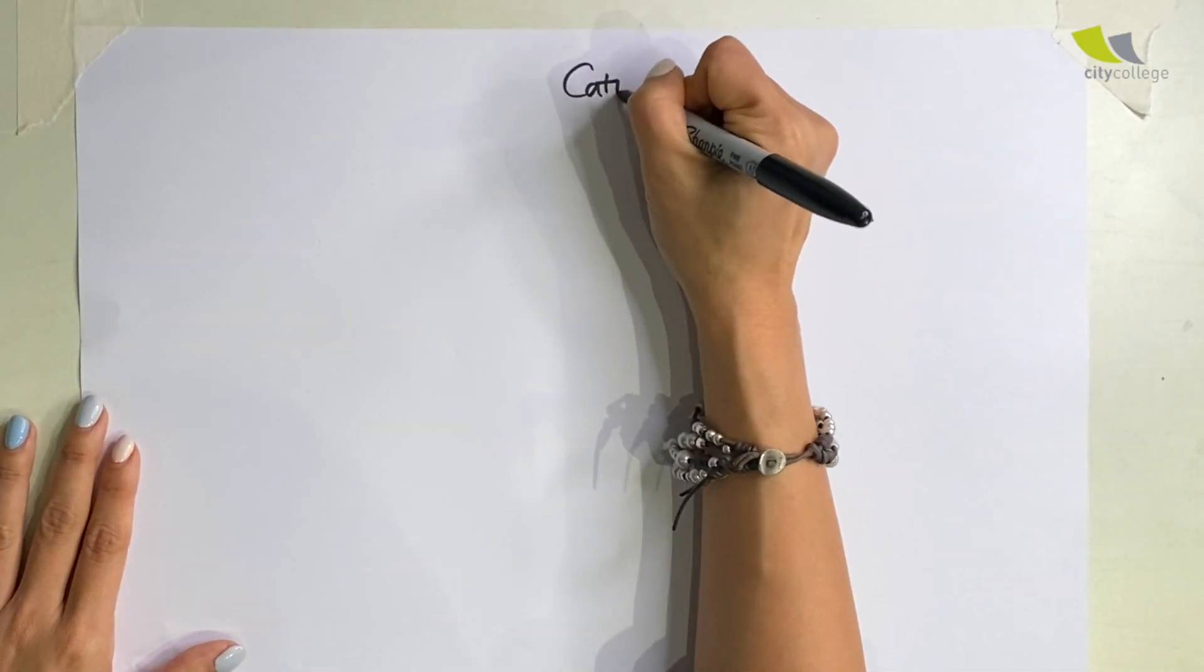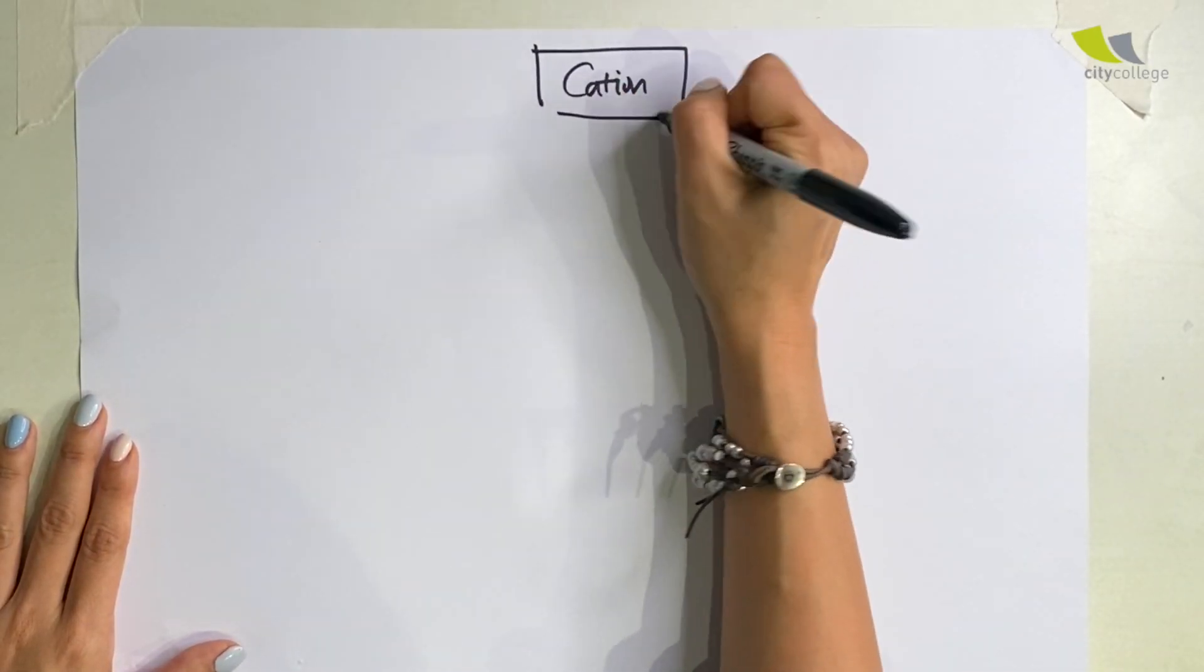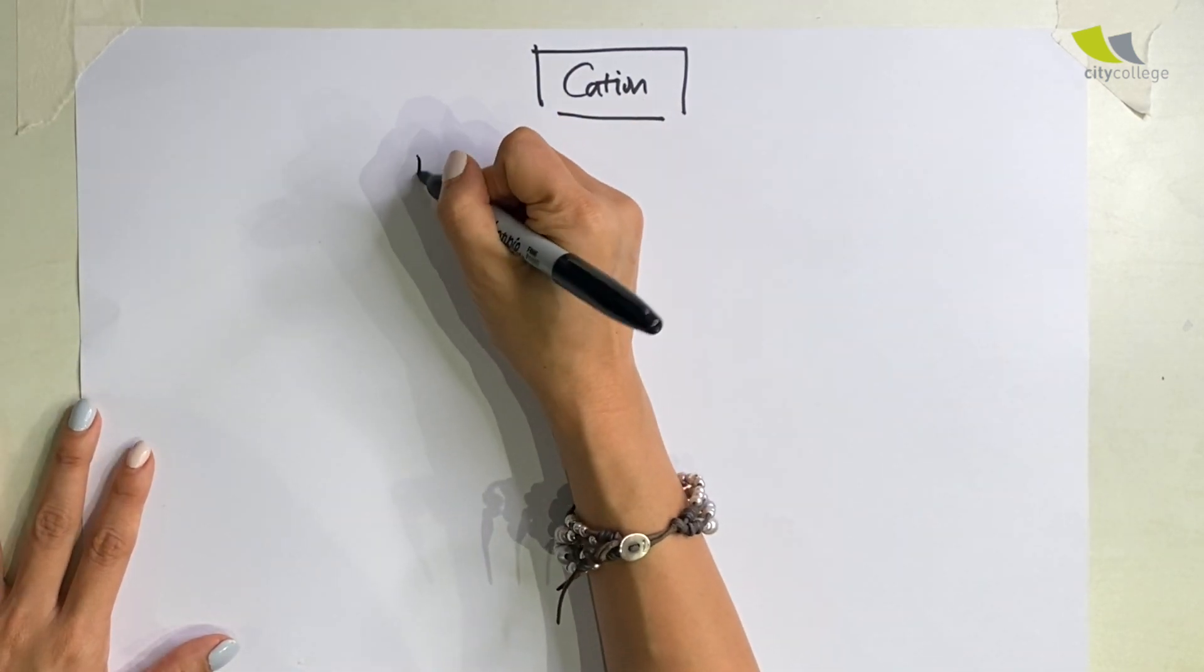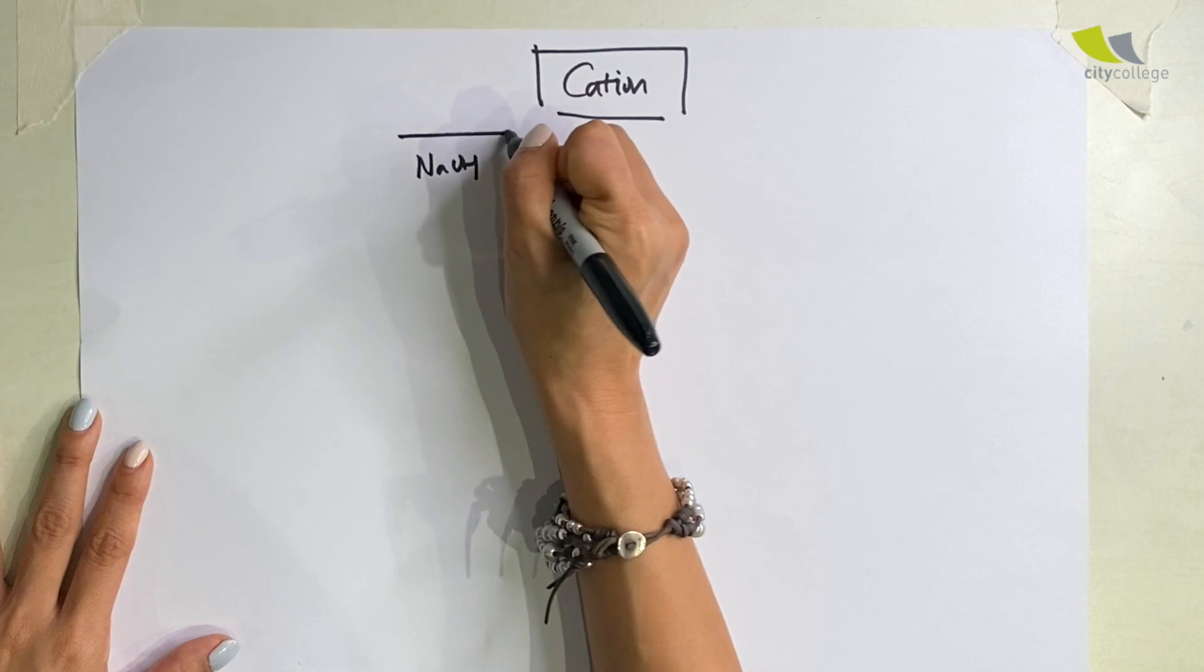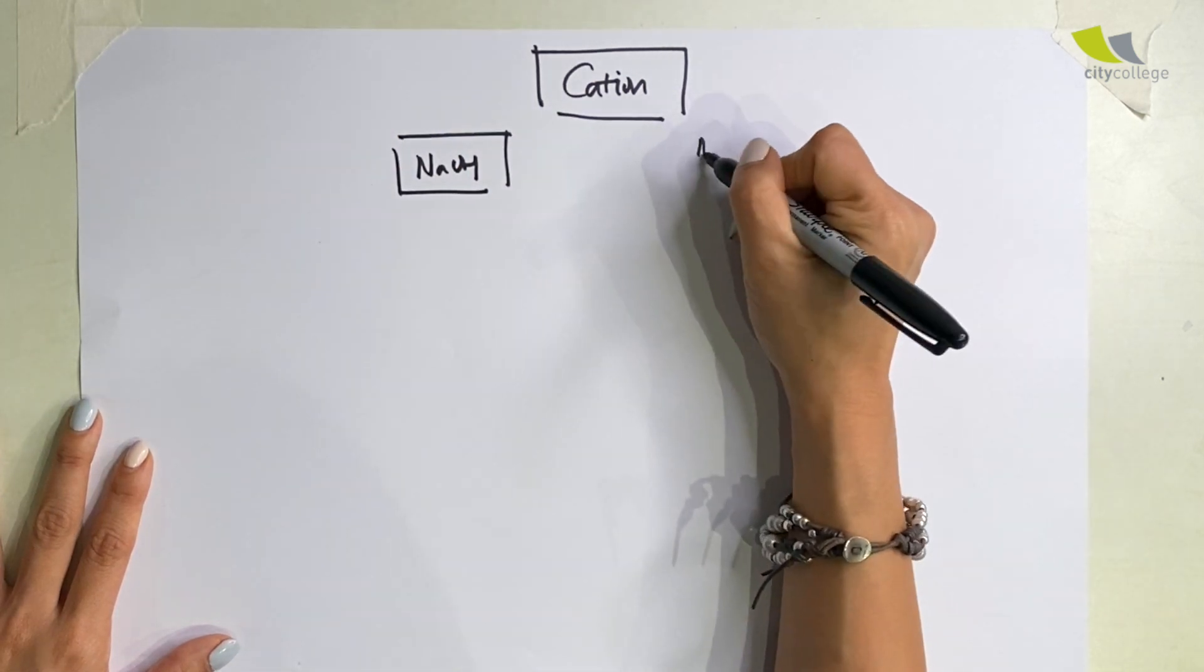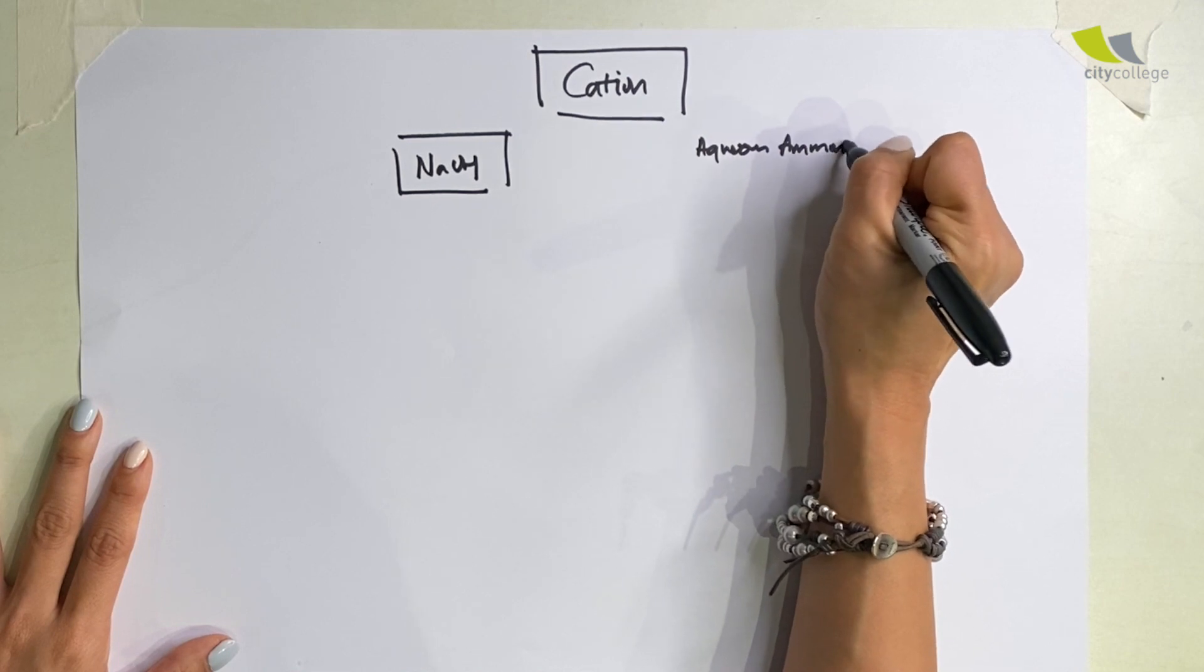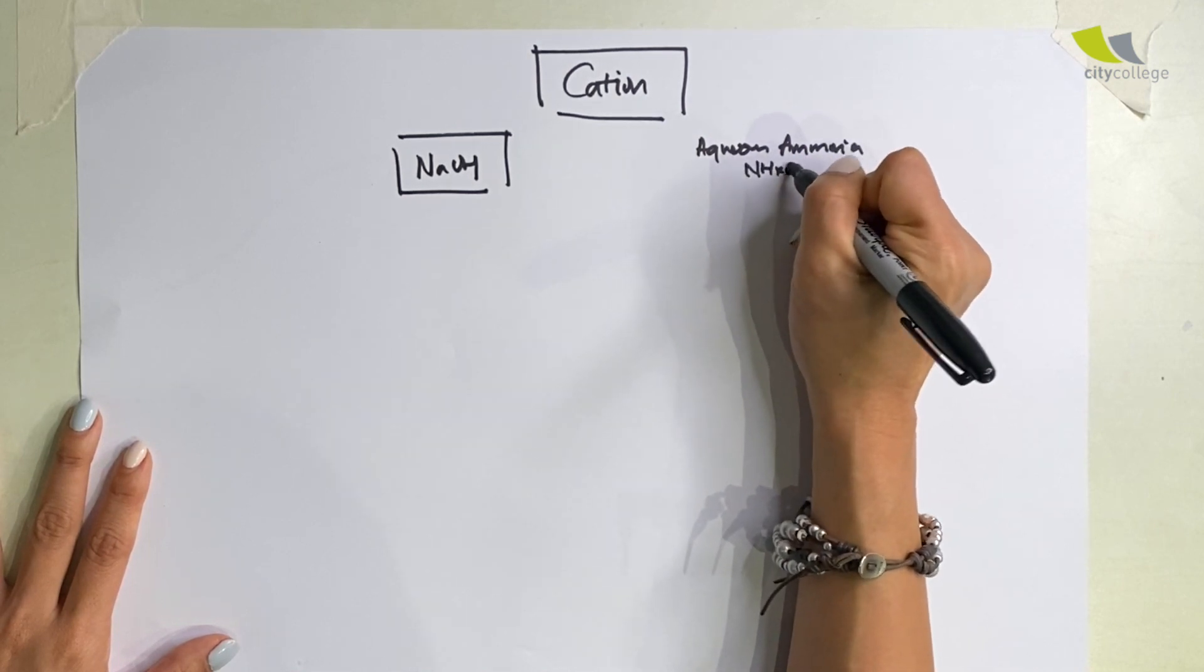Today I'm going to go through the test of cations. To test the cation, we have two solutions that we specifically use: one is sodium hydroxide, and another is aqueous ammonia NH4OH.